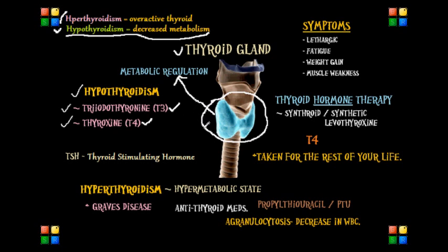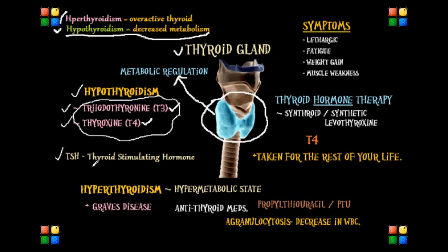So how do we diagnose patients with hypothyroidism? We focus on the key hormones T3 and T4. The values of these hormones will be decreased. We also look at TSH, or the thyroid stimulating hormone. In a patient with hypothyroidism, TSH will be elevated, because the body's physiology will try to compensate for the lack of T3 and T4 stimulation.